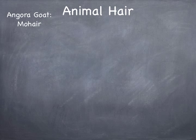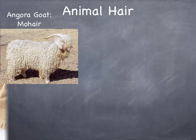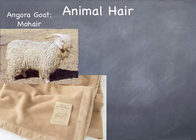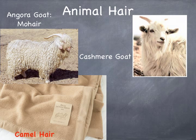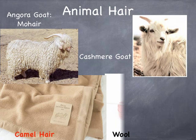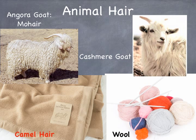I also included pictures of different sources of animal hair for fibers. There's an Angora goat — you can see there's a lot of hair there to be shaved. There's the cashmere goat, very soft and pretty. There's camel hair at the bottom, and then wool. Wool you're familiar with for making sweaters and shirts, etc.